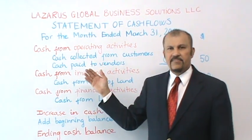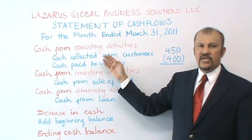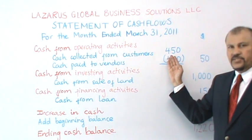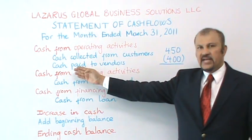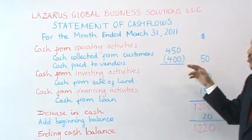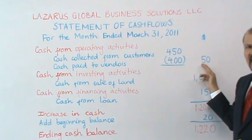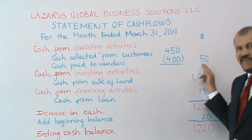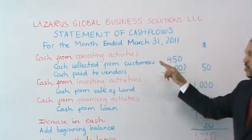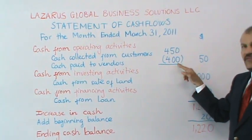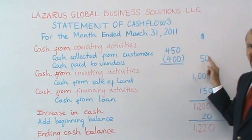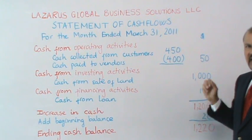Here in this example, under the operating activities, we have cash collected from our customers in the amount of $450. Below that we have another item, cash paid to vendors for $400. So between the two, when you combine them, we end up with a $50 net cash inflow from the operating activity section — a $450 inflow and a $400 outflow resulting in a net inflow of $50.